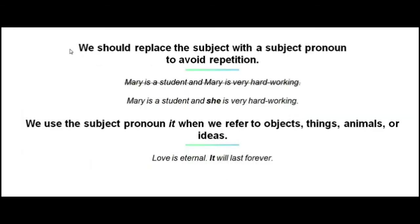We should replace the subject with the subject pronoun to avoid repetition. For example: 'Mary is a student and Mary is very hard working.' The repetition of the proper noun Mary should be avoided. We should say: 'Mary is a student and she is very hard working.'